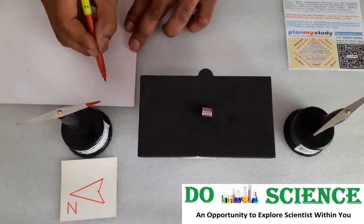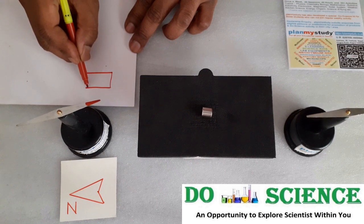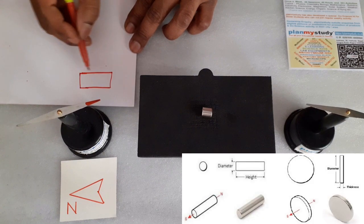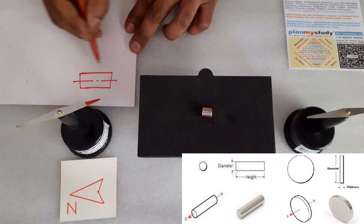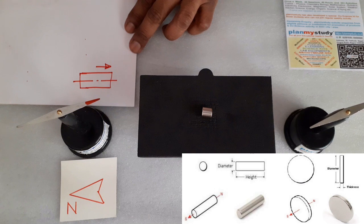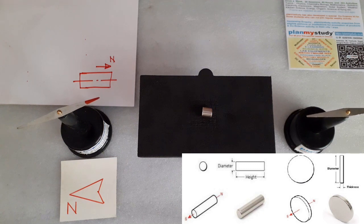I will explain this to you on paper. This is north, north side of the magnet. As under the influence of magnetism needles have changed their direction.